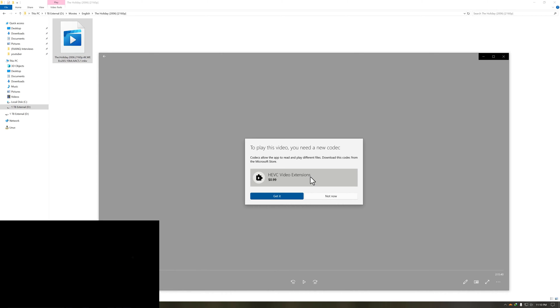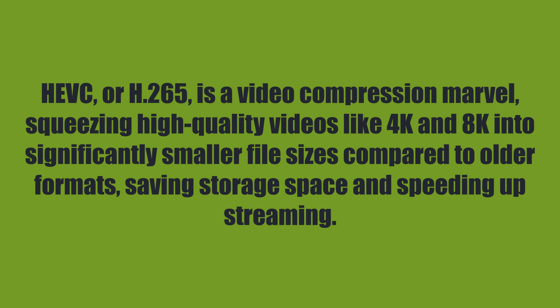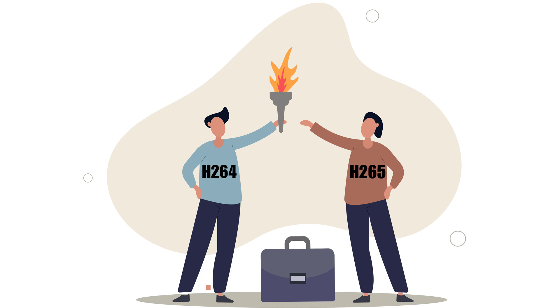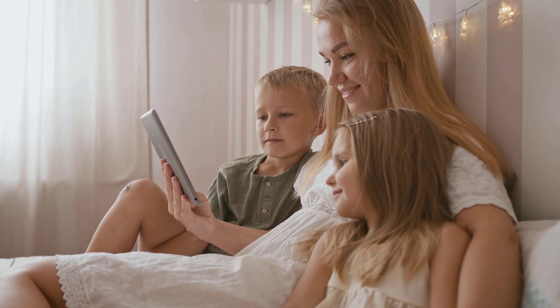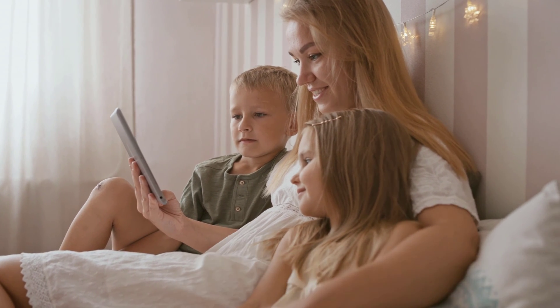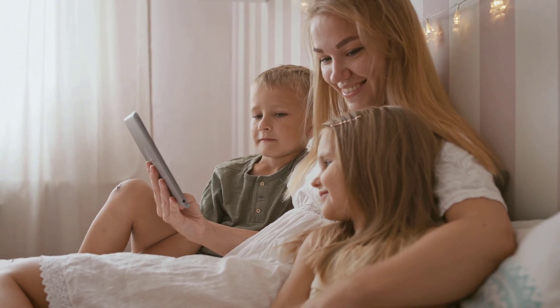HEVC, which stands for High Efficiency Video Coding, is also known as H.265. This is a video codec which is the successor to the industry standard H.264, or AVC — Advanced Video Coding. Almost all the MP4 videos we watch these days are encoded with AVC.